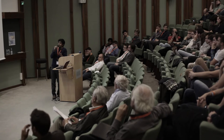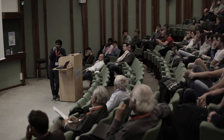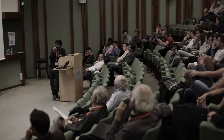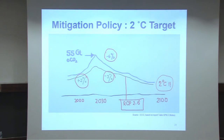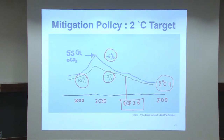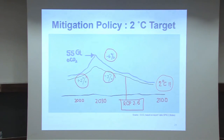If you start later, like 2050, you have to pay double the price — the cost will be much more. That means almost double if you start in 2030. So the earlier you start the mitigation process, the better. This roughly follows the RCP 2.6 line, and finally we hope to achieve 2 degrees Celsius.